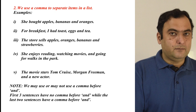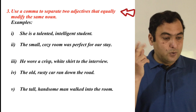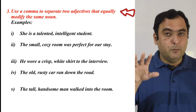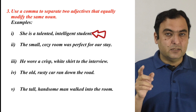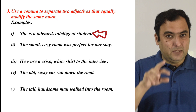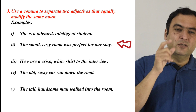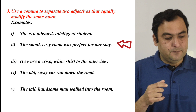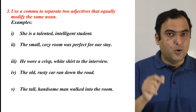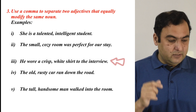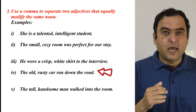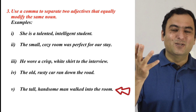The third rule is we use a comma to separate two adjectives that equally qualify the same noun. For example: 'She is a talented, intelligent student.' 'The small, cozy room was perfect for our stay.' When speaking, we pause slightly between the adjectives. 'He wore a crisp, white shirt to the interview.' 'The old, rustic car ran down the road.' 'The tall, handsome man walked into the room.' Of course, when we speak, we don't say the word 'comma' — I'm saying it for your understanding.